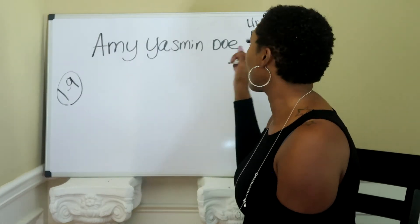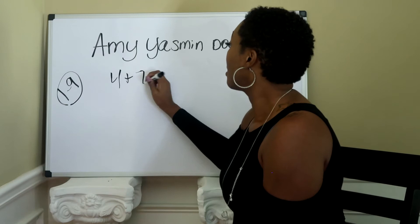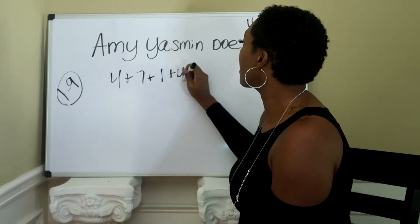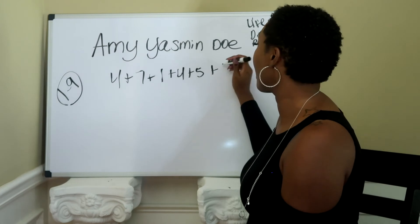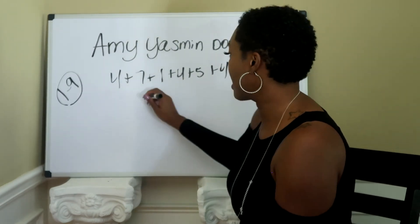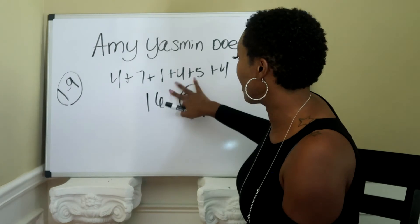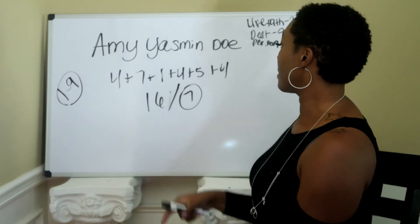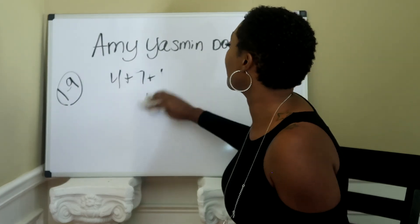So with the personality number we use only consonants. In Amy: M is four, and that Y is a consonant in Yasmin — so in Yasmin: S is one, M is four, and N is five. Then D is the only consonant in her last name Doe, and that equals four. Adding all of these up gives 16, which reduces to seven. Her personality number is a seven — only the consonants in her name.